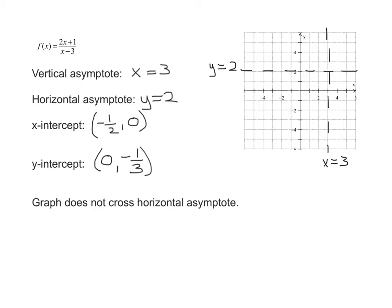Now I have the x-intercept of negative 1 half, 0. So I start at the origin and go half a unit to the left, which is kind of hard to do, but it gives me a point about there. Then I need 0, negative 1 third my y-intercept. So again, start on the origin and go down about a third of a unit. And I've got my second point.